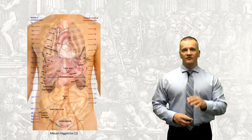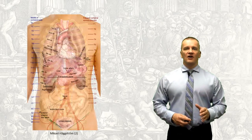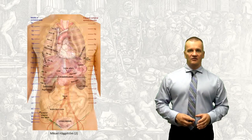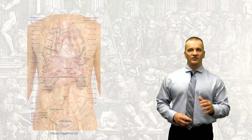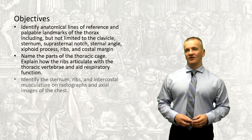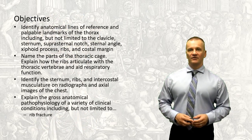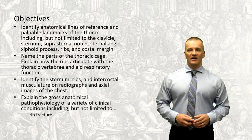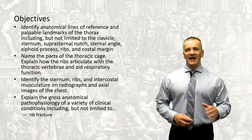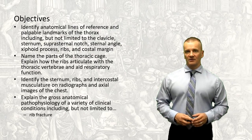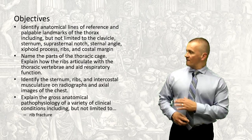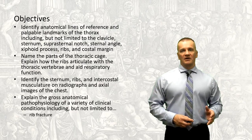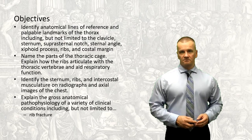In this first session, we're going to look at the osteology of the thoracic cage. We'll discuss some palpable landmarks and anatomical lines of reference, discuss the components of the thoracic cage, and how to identify these structures in medical imaging. Finally, we'll also discuss the medical implications of rib fractures.